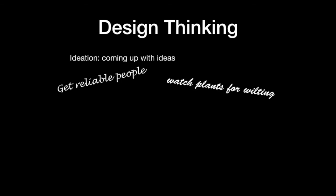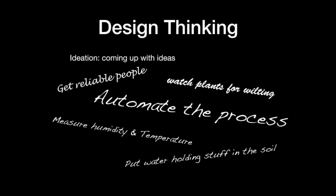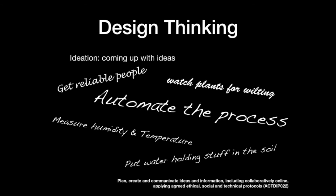Going back to design thinking, having had some idea about the scope of the problem from both a systems perspective and an empathy perspective, we can start to come up with ideas. A brainstorming session might produce ideas like watching plants for wilting, measuring humidity and temperature — they all contribute to the solution. But all of them have a basic flaw: they rely on people or things to happen at a particular time.